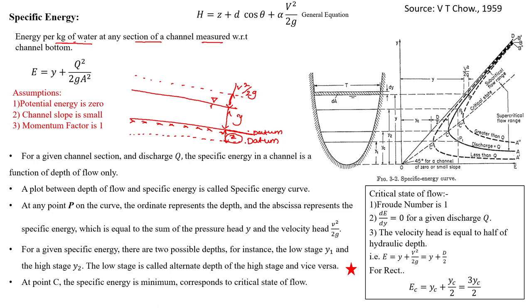Specific energy is energy per kg of water at any section of a channel with respect to the channel bottom. That will be y. This is the full form — it can also be written as V²/2g. As we know Q = AV, so V = Q/A. By replacing that you get Q²/2A. Writing in this form will help us in solving questions. That's why I've directly written Q²/(2g·A²) here. Remember it will be y + V²/2g — this is the specific energy equation.